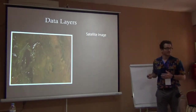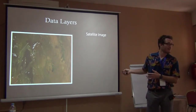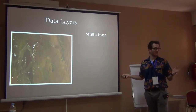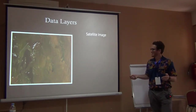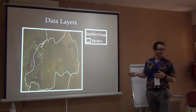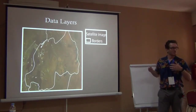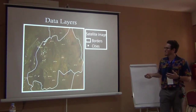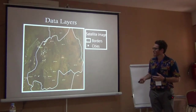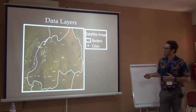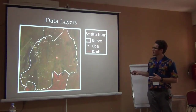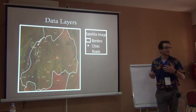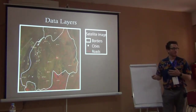We have the real world and then different representations of it in different layers. We have two major layer types: raster and vector. Looking at Rwanda as an example — we can see just the land area, then add the border, then cities like Kigali and Goma, then roads.